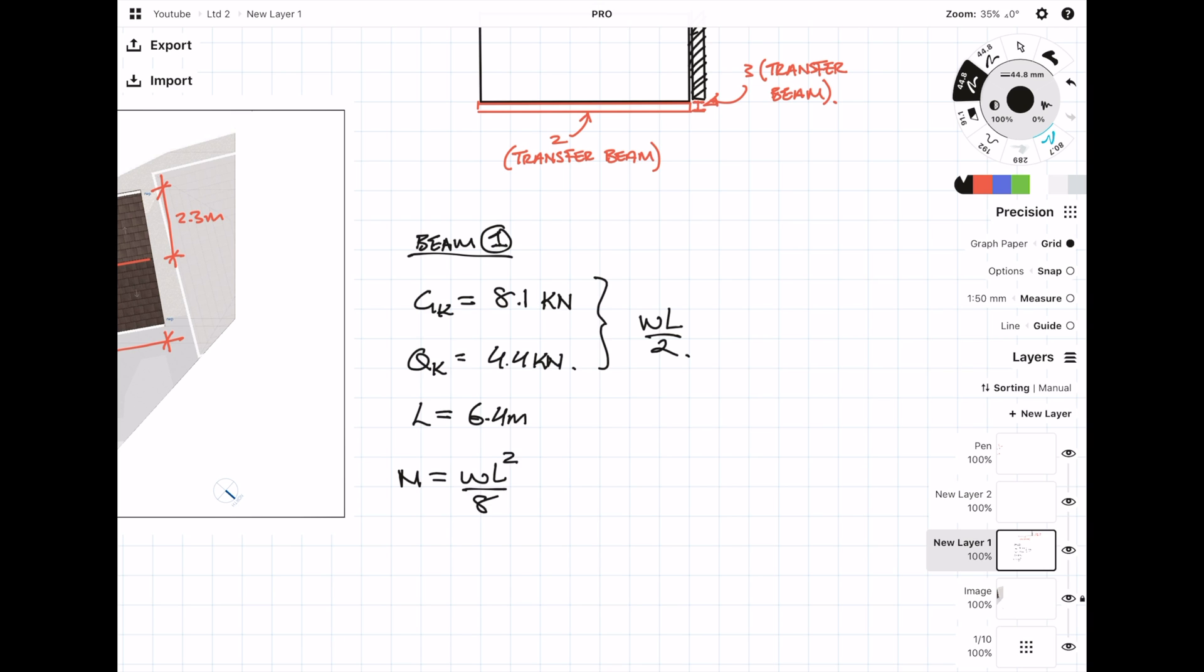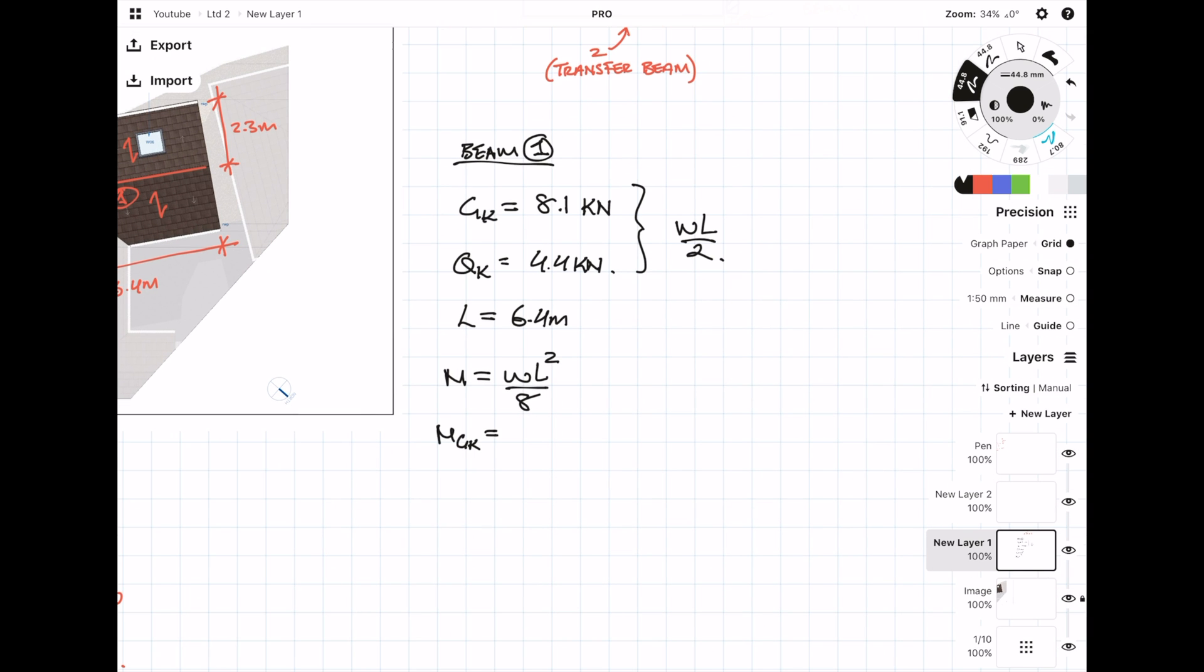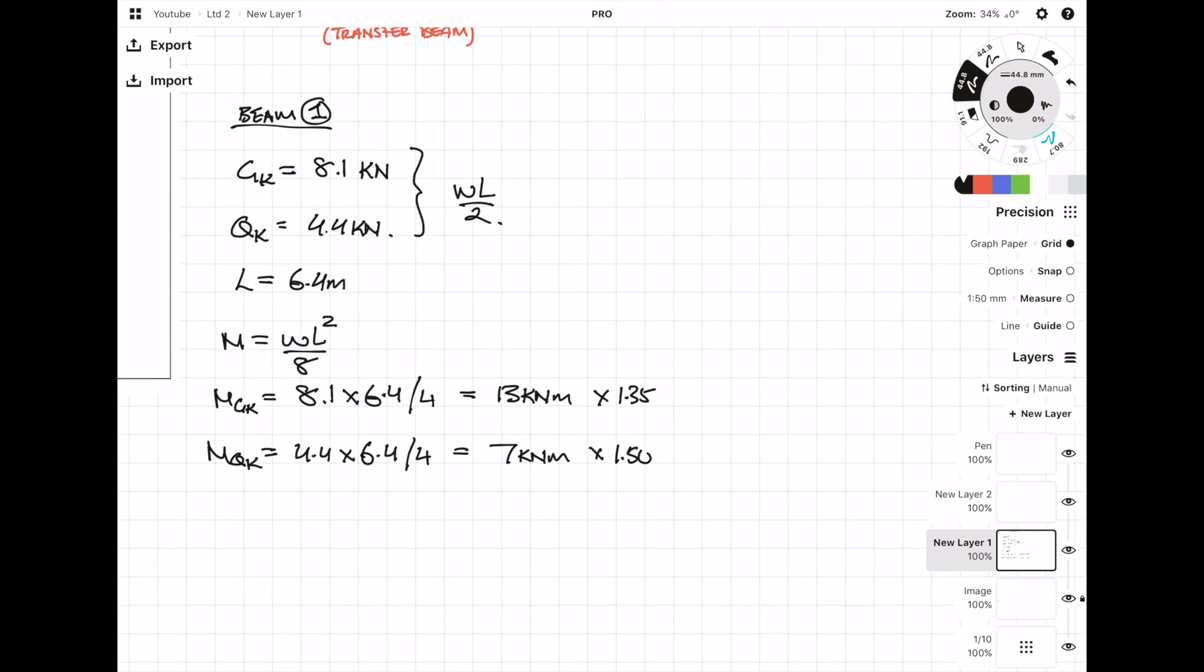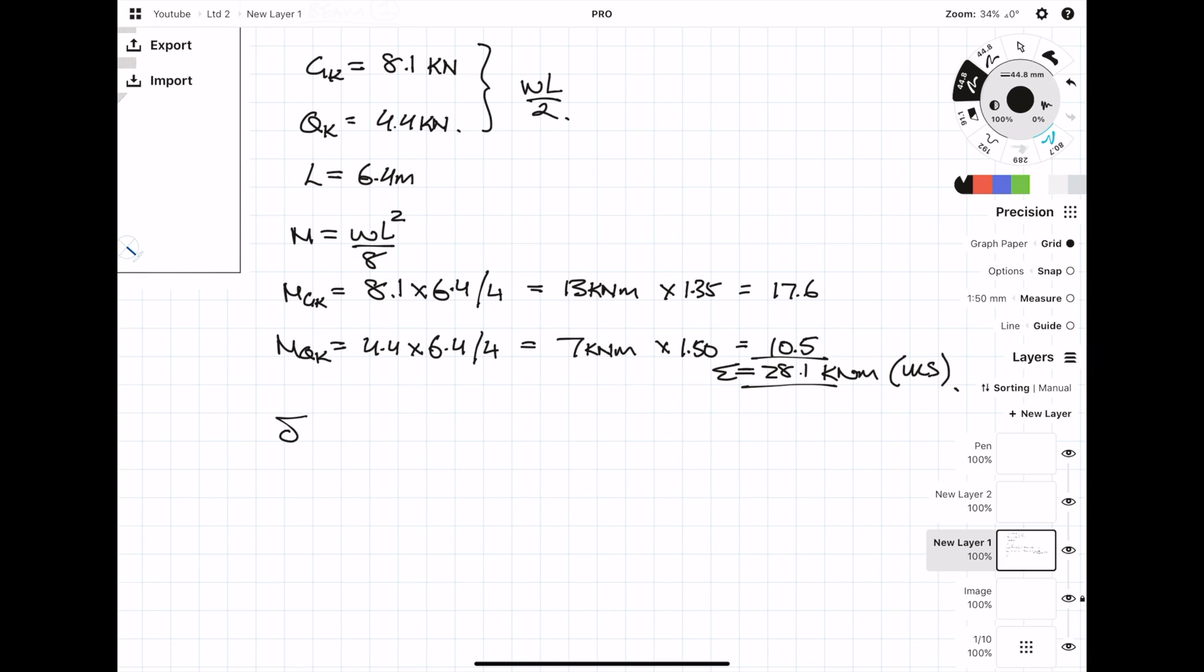Because the reactions are broken down into dead and live, the moments I'm working out can also be broken down. Normally I would have combined them earlier, but for the sake of this example I'm just going to break them down and add them up later. Now I multiply by the Eurocode dead and live load factors and then add them up. Because the applied dead and live loads are relatively similar, the deflection limit I'm going to be going for is span over 250.